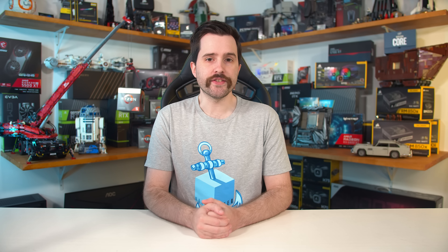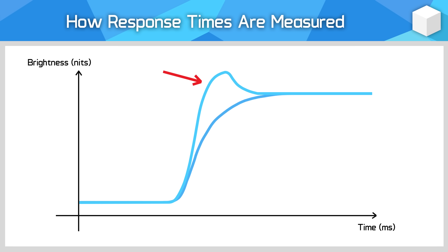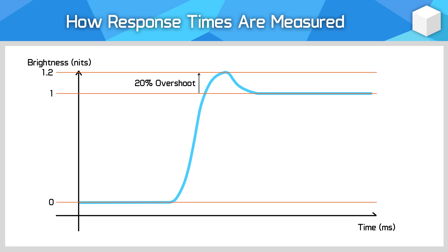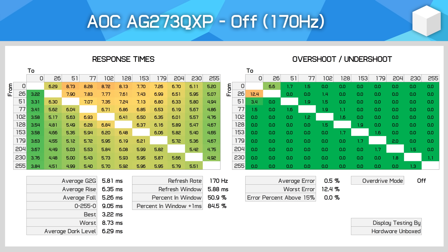The other important measurement to make is overshoot. The response we just looked at did not feature any overshoot, so let's overlay a response that does. Generally the response time will decrease when measured this way, which is better. However, there's a hump added on top where the response overshoots the final value as it attempts to transition quicker. We measure overshoot as a percentage — let's say the initial point is zero, the final point is one, and the peak of the overshoot is 1.2. This would indicate a 20% overshoot.